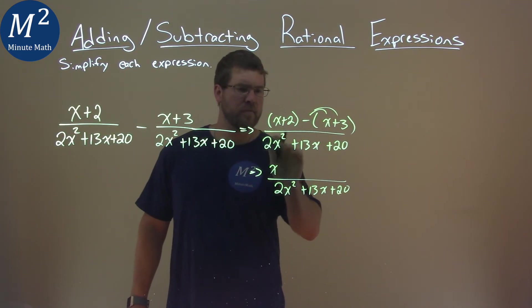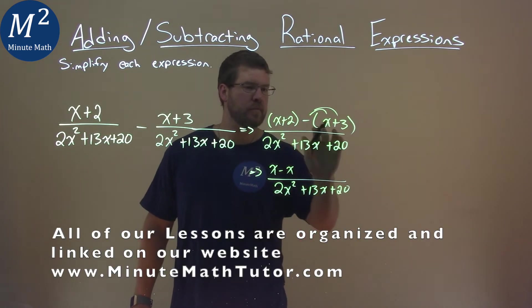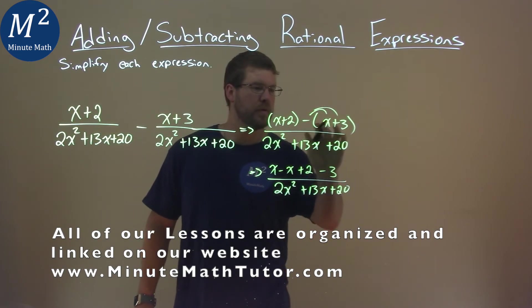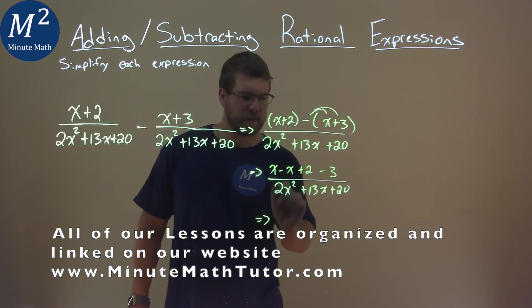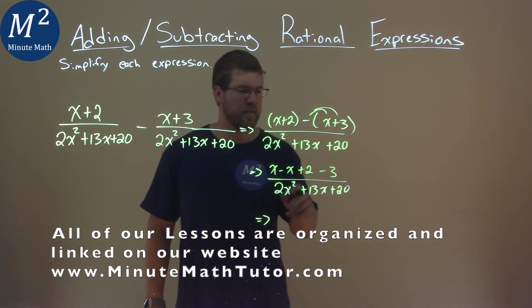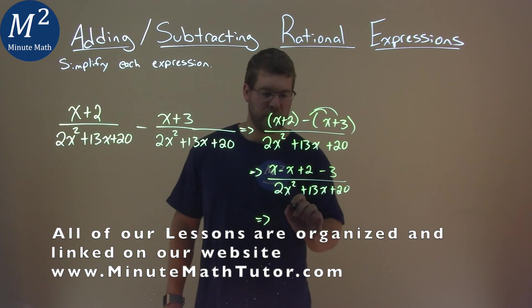So, we have an x right here minus that x. Then we have positive 2 minus the 3. So, now we combine the like terms. x minus x is 0. Don't need to write that. And 2 minus 3 is negative 1.